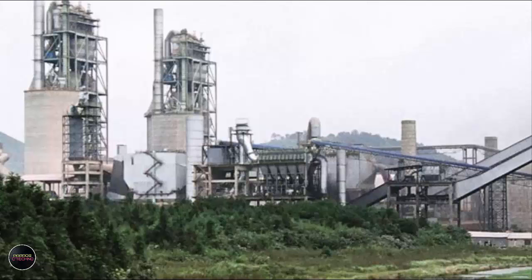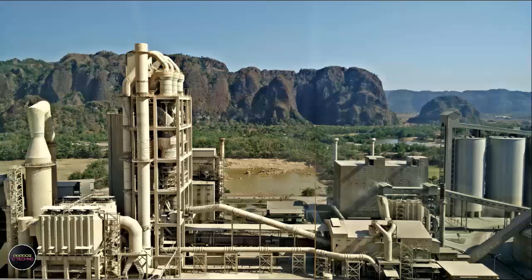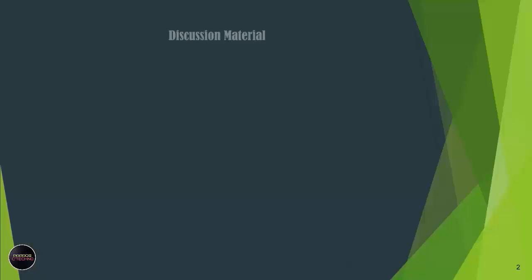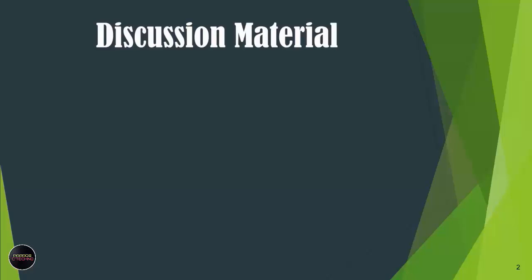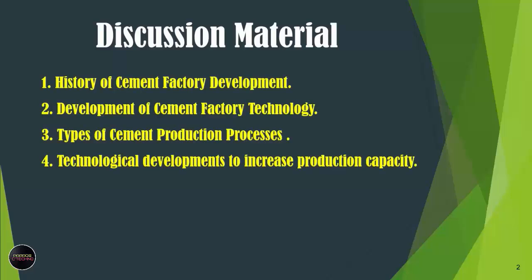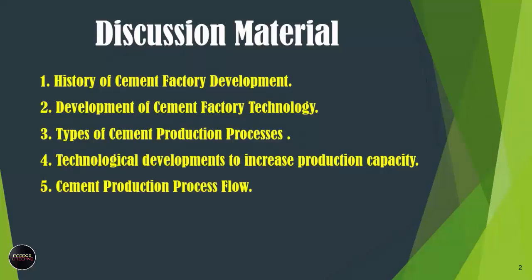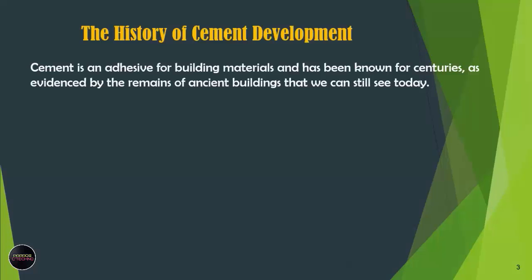Before learning more about the cement production process, the first video we made was to get to know the history of the development of the cement industry, and next we will make videos that are interrelated between one process unit and another. The discussion material covers: 1. History of Cement Factory Development, 2. Development of Cement Factory Technology, 3. Types of Cement Production Processes, 4. Technological Developments to Increase Production Capacity, and 5. Cement Production Process Flow.